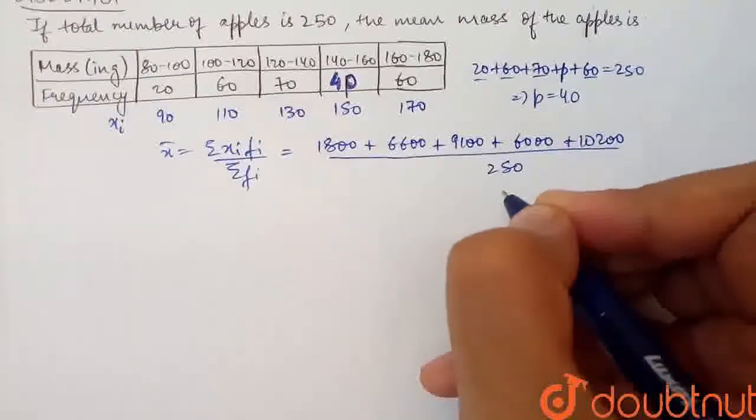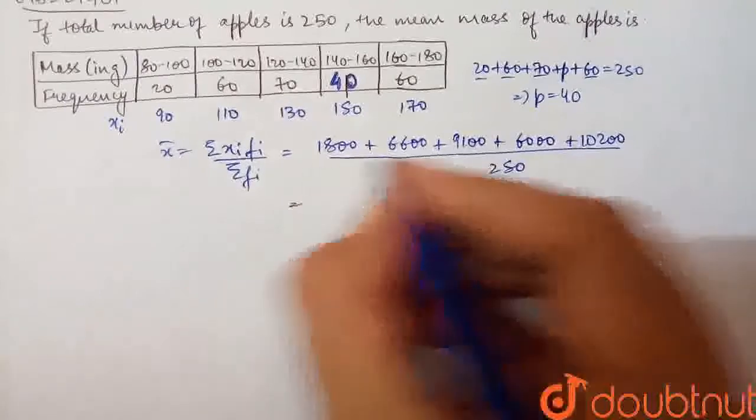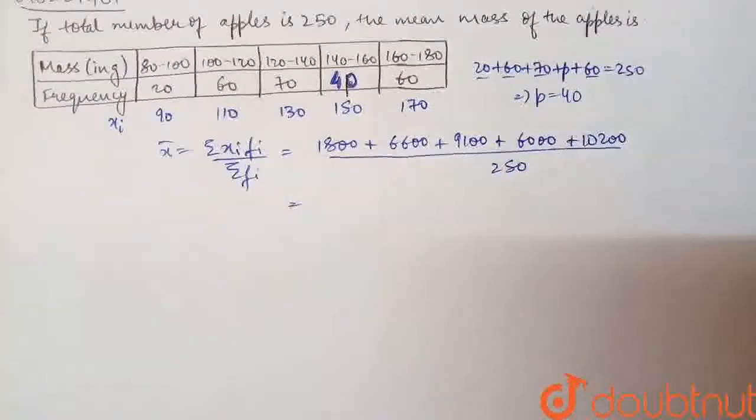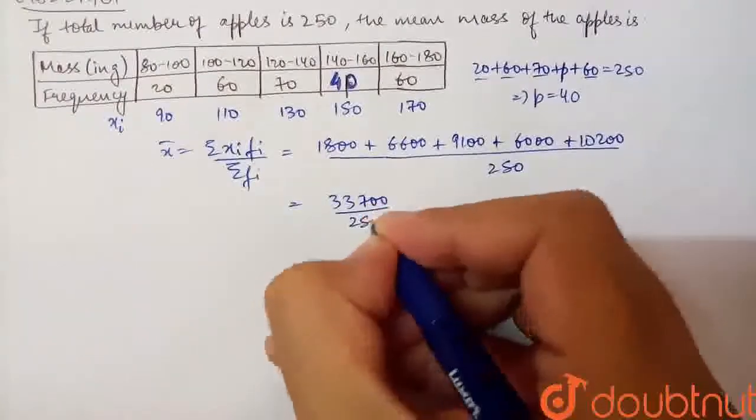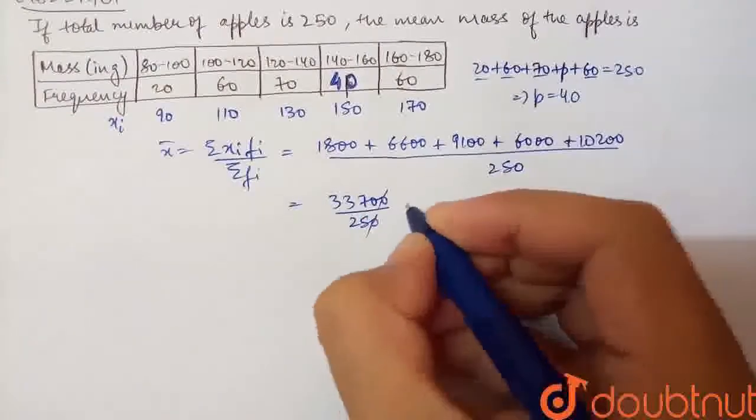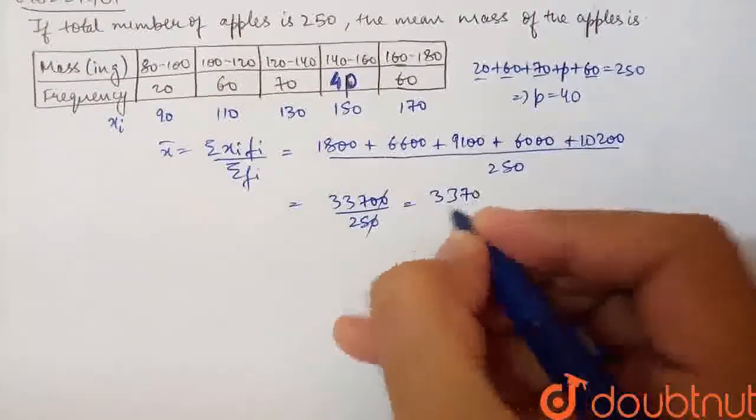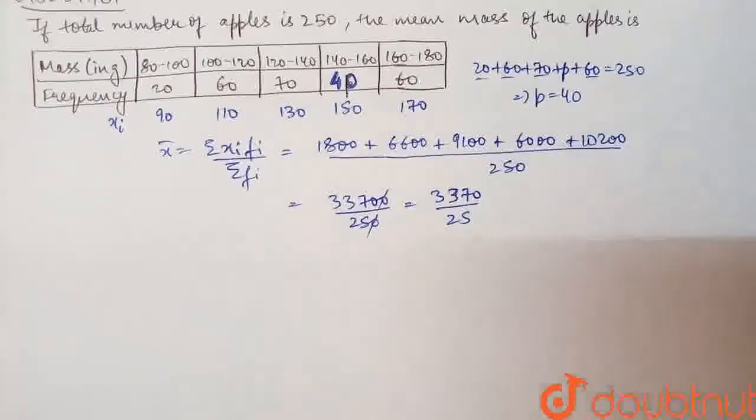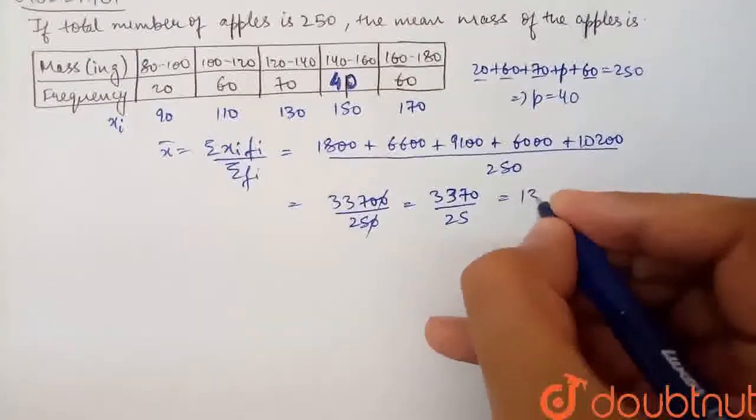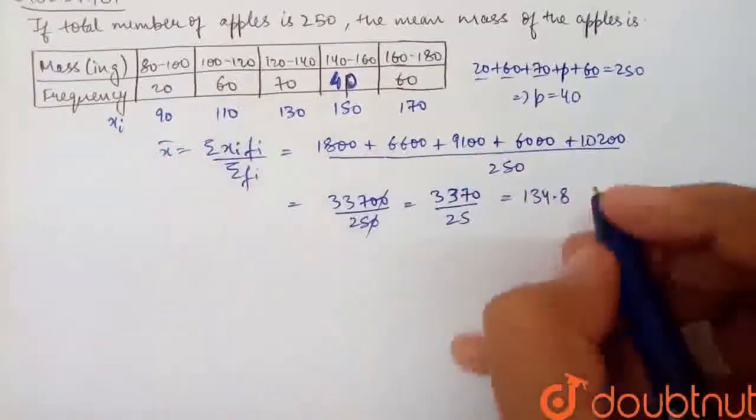The whole thing is divided by summation Fi which is 250. When we sum the numerator we get 33700 over 250. This simplifies to 337 over 2.5, which gives us 134.8.